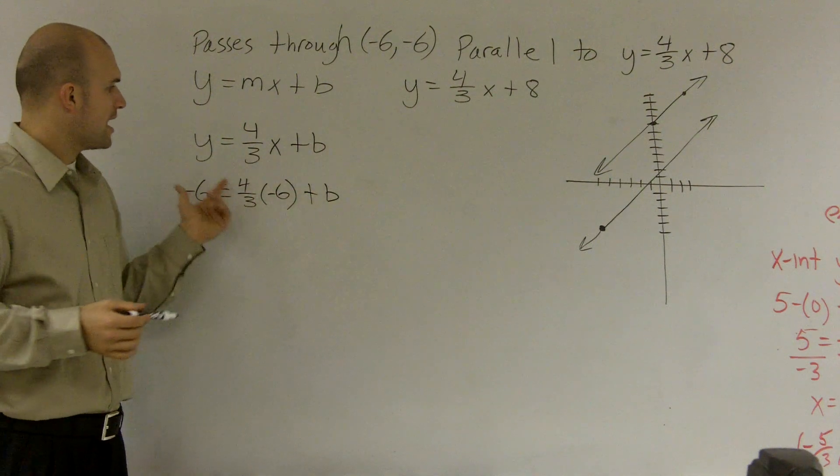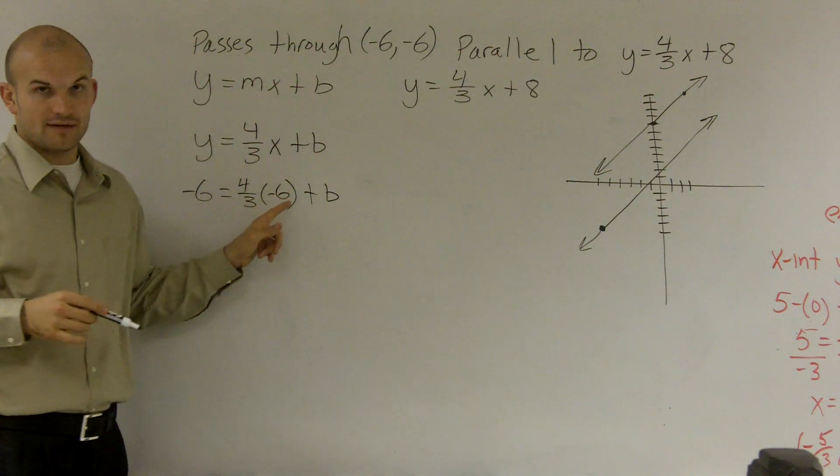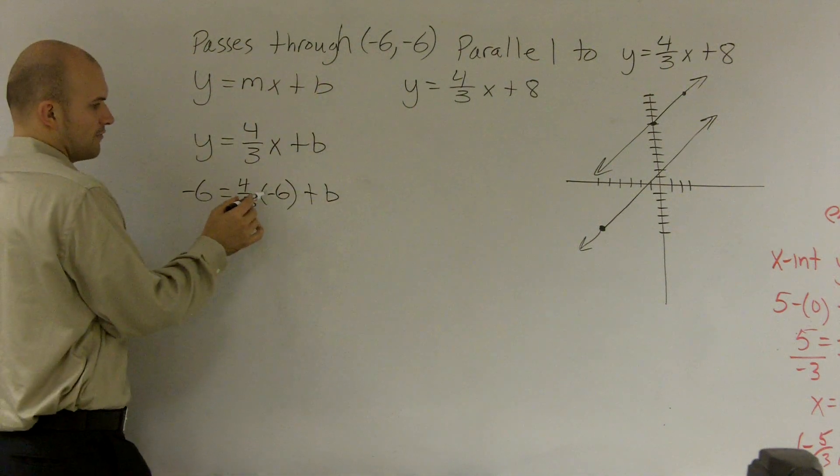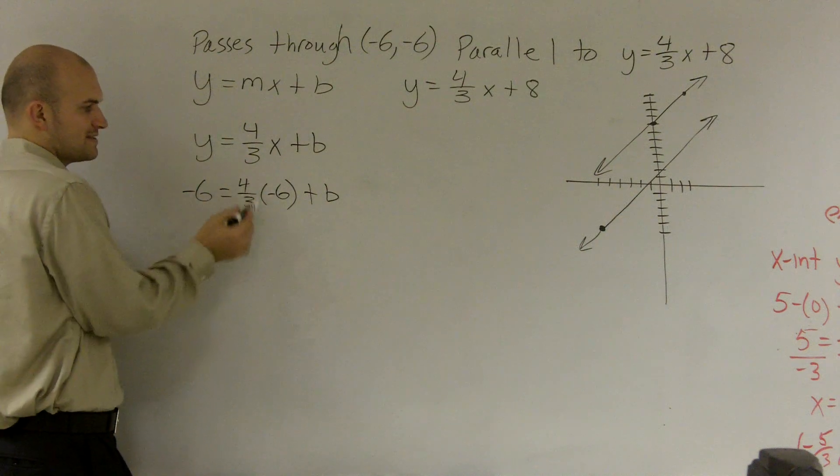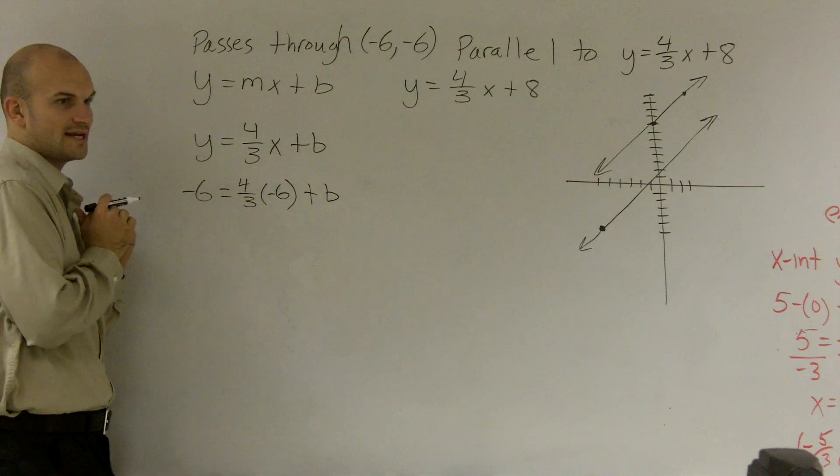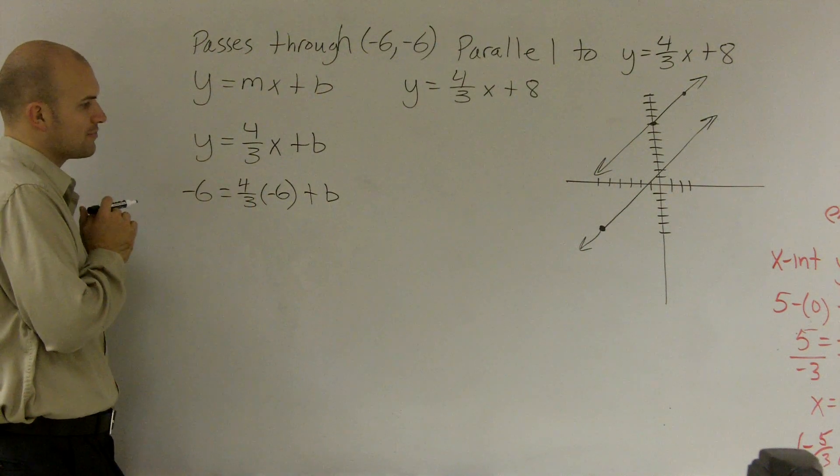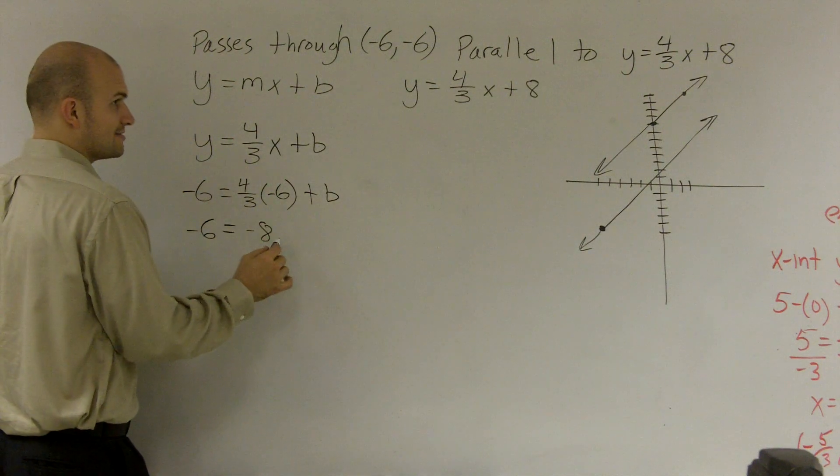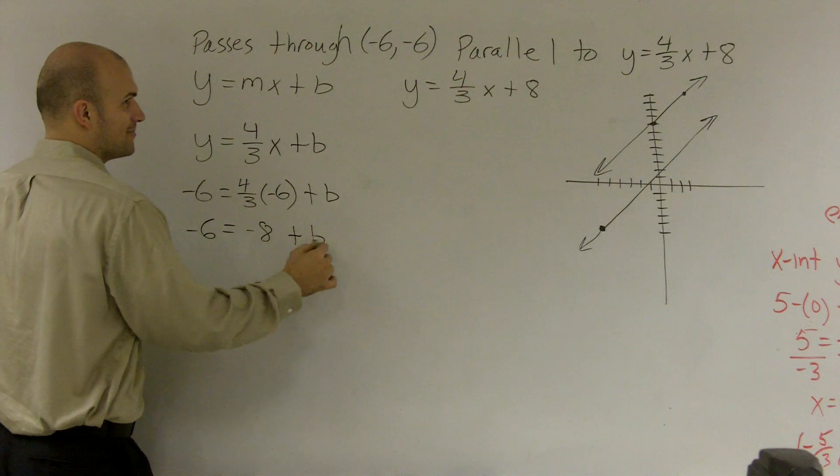So all I need to do is plug in my x and y from my points, and then solve for b. So to solve 4/3 times -6: 4 times -6 is -24, and -24 divided by 3 is -8. So I get -6 = -8 + b.